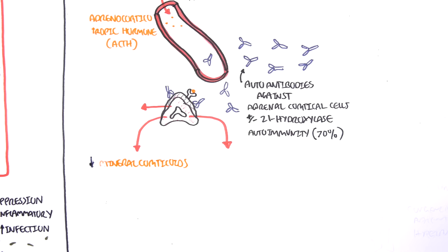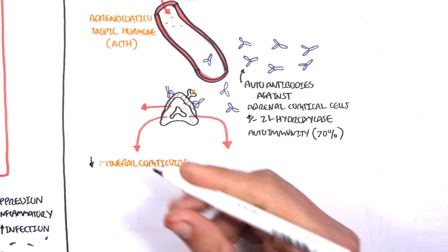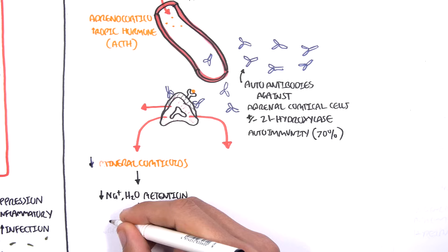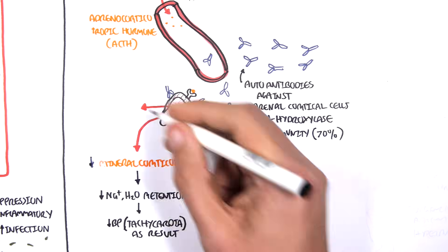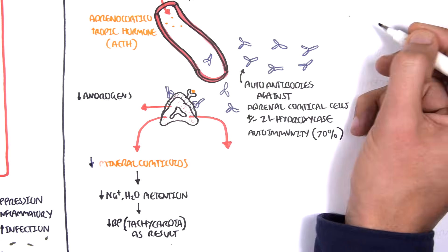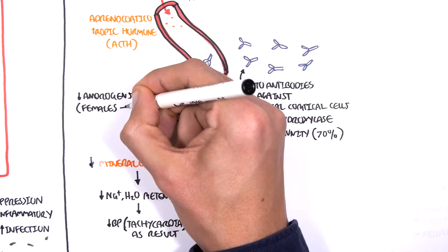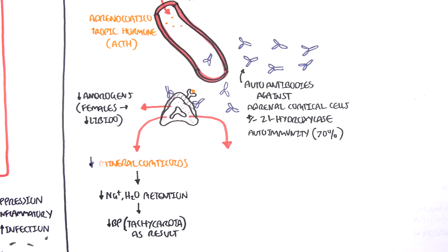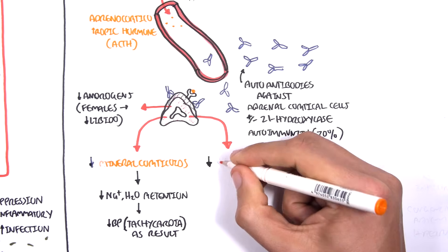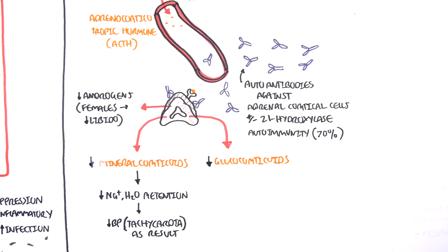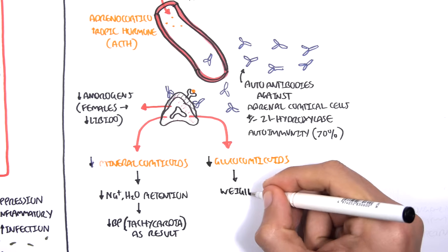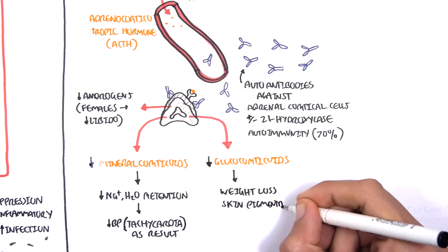A decreased production of mineralocorticoids will cause a reduction of sodium and water retention, and so will reduce blood pressure. A decrease in blood pressure will cause tachycardia as a compensatory mechanism. A reduction in androgens does not really have an effect on males, rather more of an effect on females, causing a decrease in libido. A reduction of glucocorticoids by the autoimmune attack causes many things — basically the opposite effects of what glucocorticoid steroids would otherwise do — meaning people with Addison's disease will have weight loss, skin pigmentation, and fatigue in general.